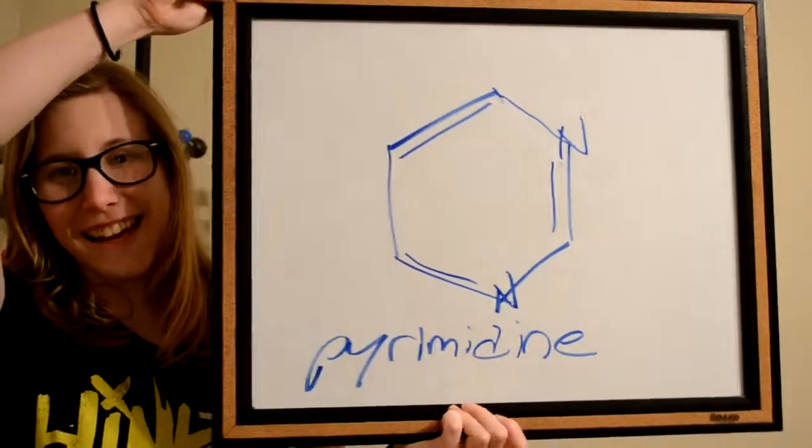This is a pyrimidine ring. Yes, pyrimidine and purine both refer to functional groups. Officially, a pyrimidine is a heterocyclic compound with nitrogens meta to each other.